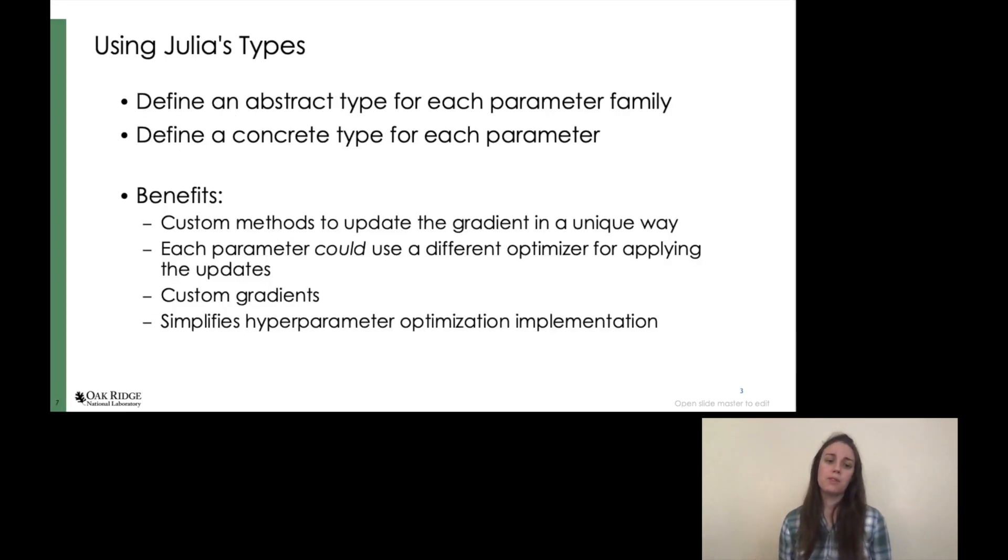So for those who are familiar with Flux, using Julia's types to wrap learnable parameters might feel very familiar. For others, it might seem unnecessary and maybe borderline abusive. But there are a few reasons why we wanted to do this. First, updating and applying the gradient to each of these parameter types is going to be different. Obviously, updating a convolutional neural network is going to be different than updating a single floating point parameter. And in some cases, the parameter might be a function that we want to define custom gradients on.